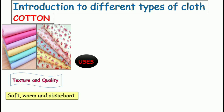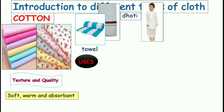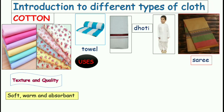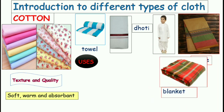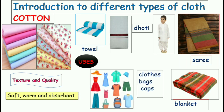Now let us see the uses of cotton cloth. Cotton cloth is used to make towels — we all wipe our body dry using a towel after a bath. Then we have the doti, which is worn from the waist below as you can see in this picture. We also get sarees, cotton sarees, cotton blankets, cotton clothes, bags, and caps.